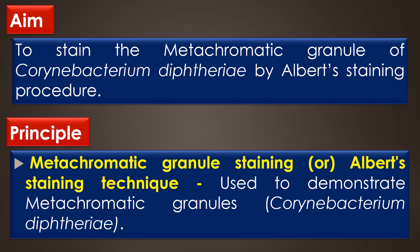Metachromatic granule staining, or Albert staining technique, is a type of special staining technique since it is used to demonstrate a special structure in bacteria. It is chiefly used to demonstrate the metachromatic granules found in Corynebacterium diphtheriae, which is a gram-positive bacillus. This organism is responsible for the disease diphtheria, and the name Corynebacterium is derived from the Greek word 'coryne,' which refers to the club shape of the bacteria seen in old cultures.